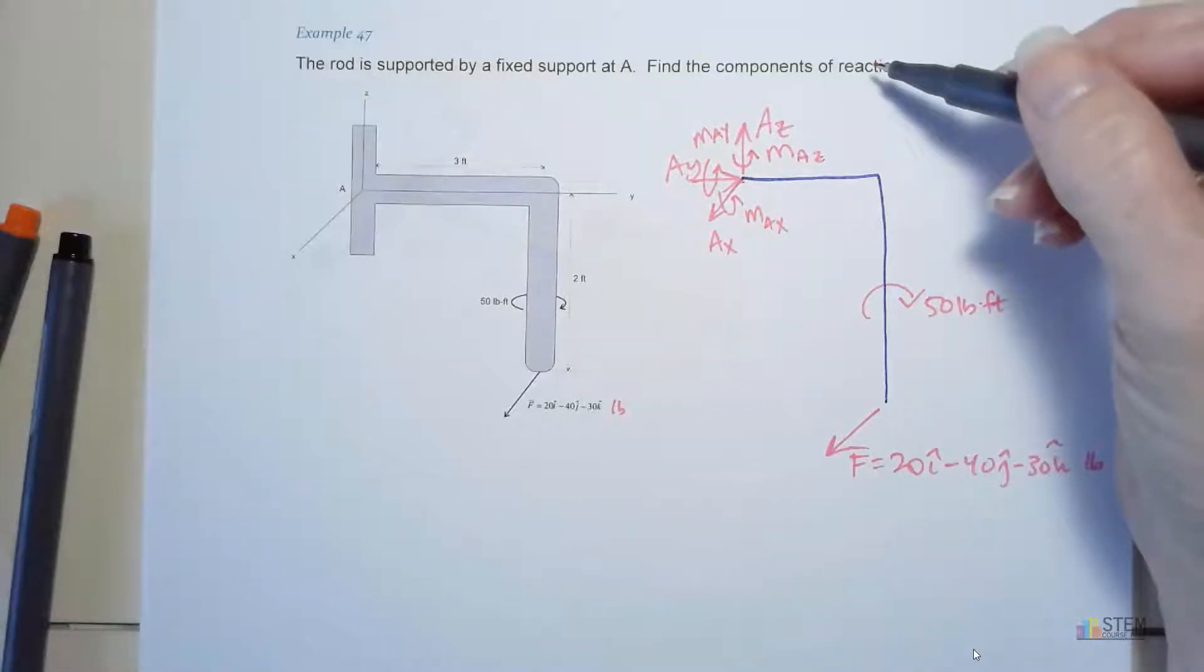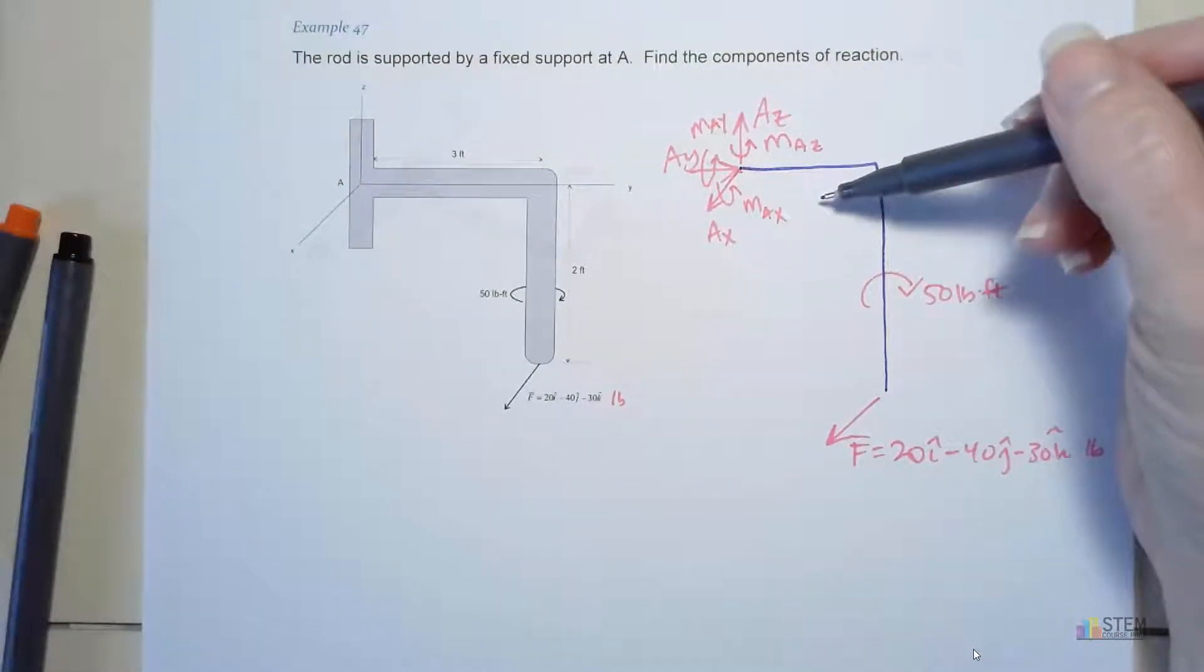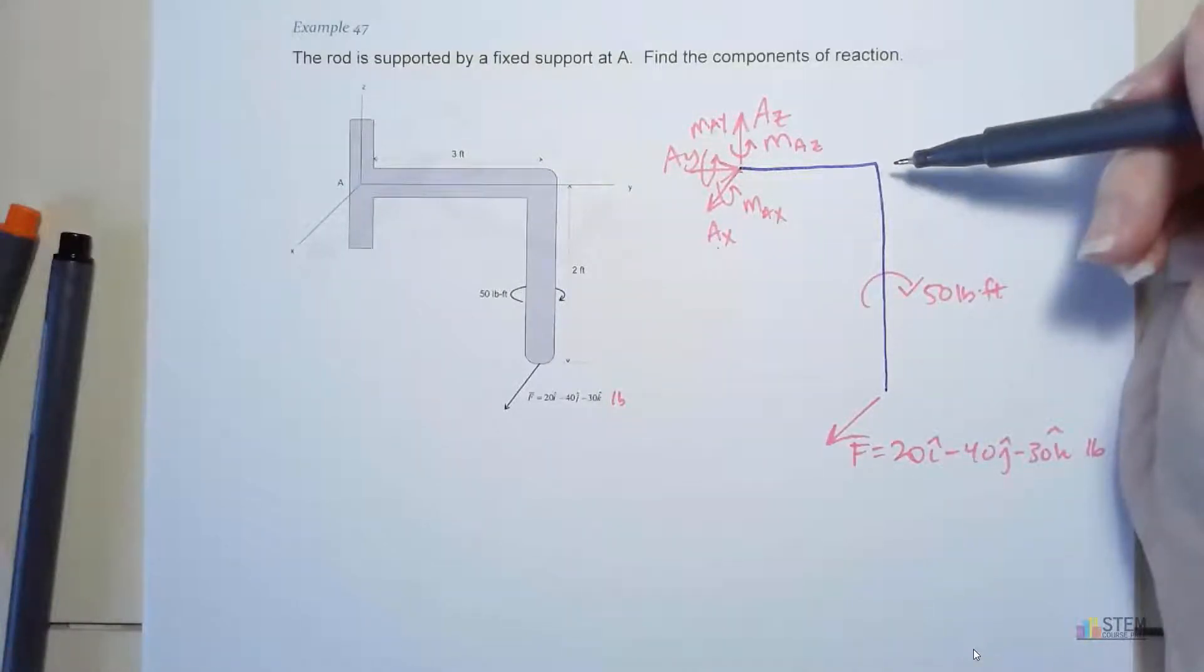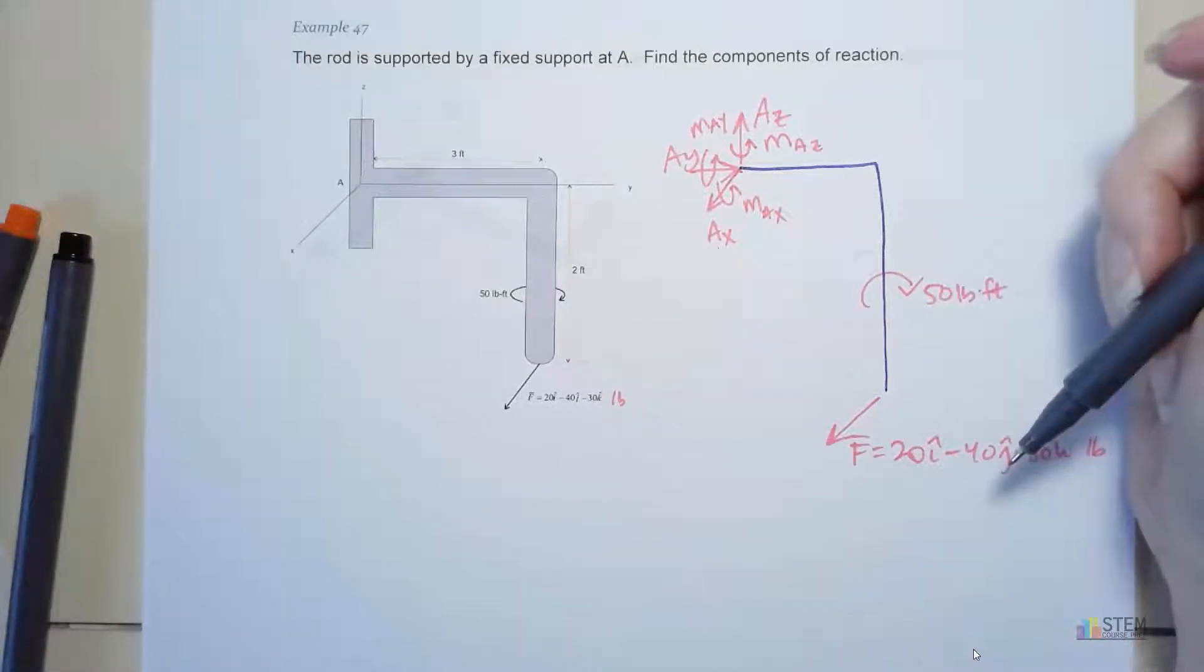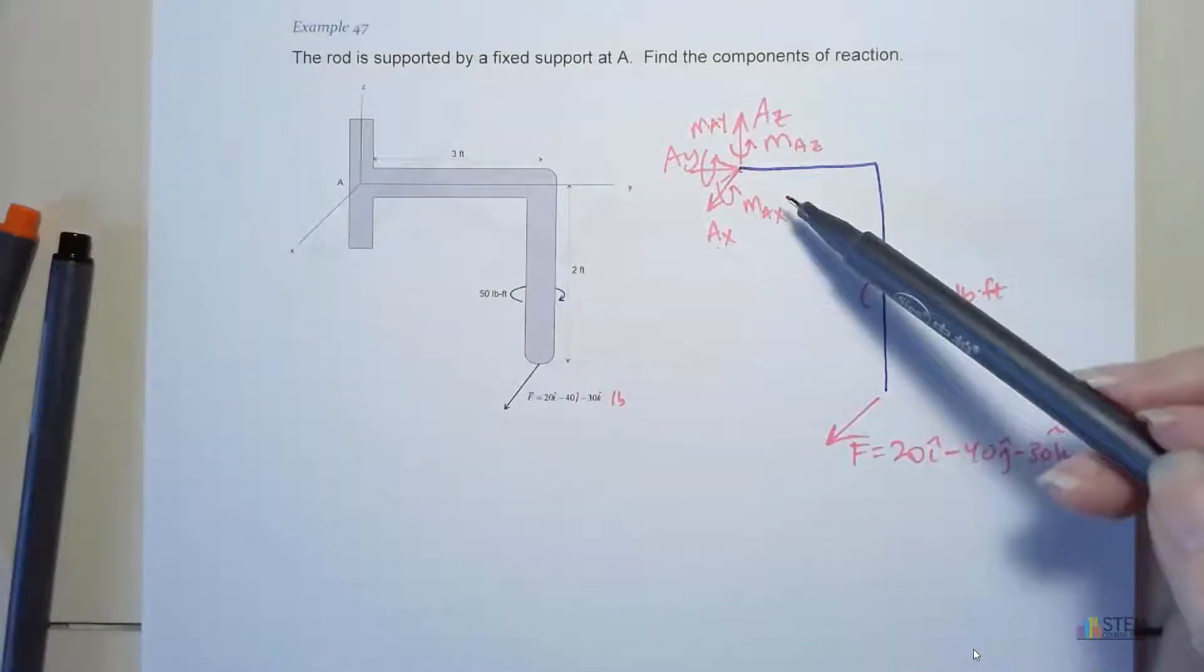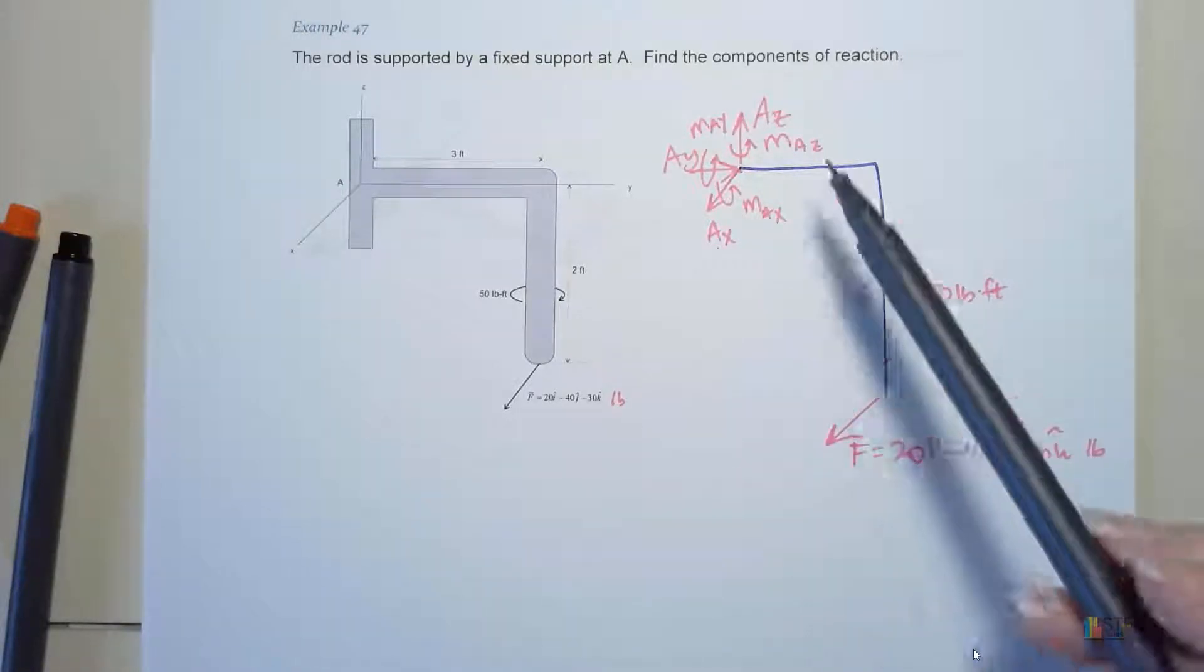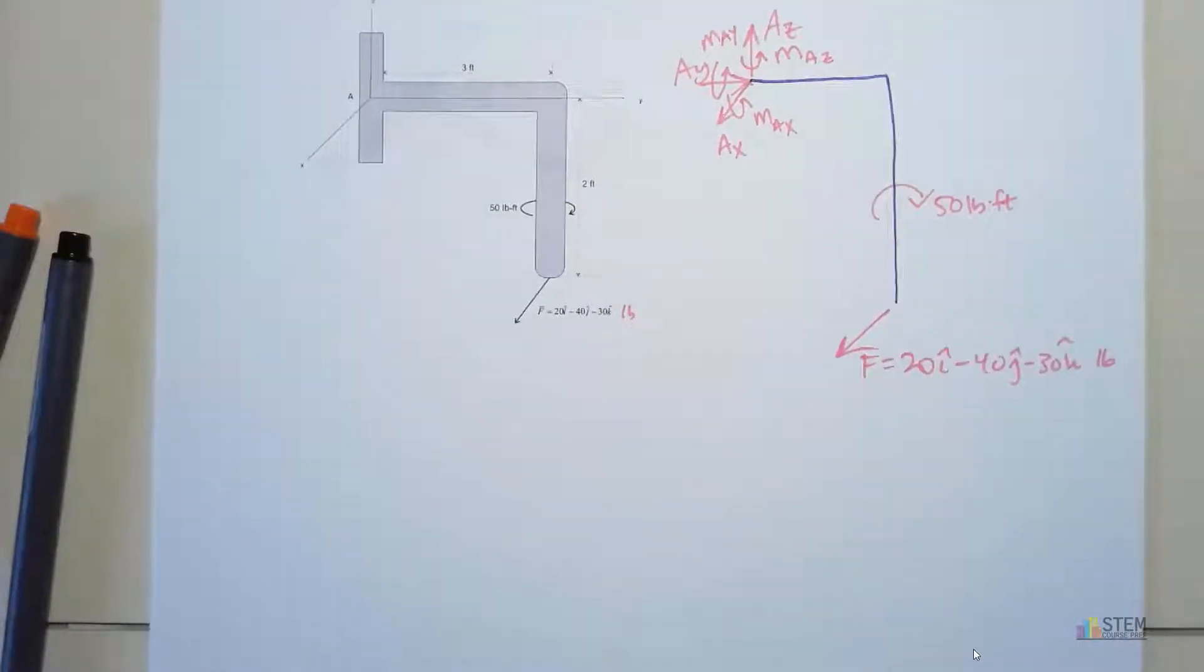Now look at this diagram and make sure you are going to be able to solve it. Remember, you only have six equations available to you. And how many unknowns do we have? We've got six, right? We've got three forces, three moments. Six equations, six unknowns. So we should be able to solve this one. If you have something where you have eight unknowns, but you only have six equations, you've done something wrong, and you need to re-evaluate your supports.